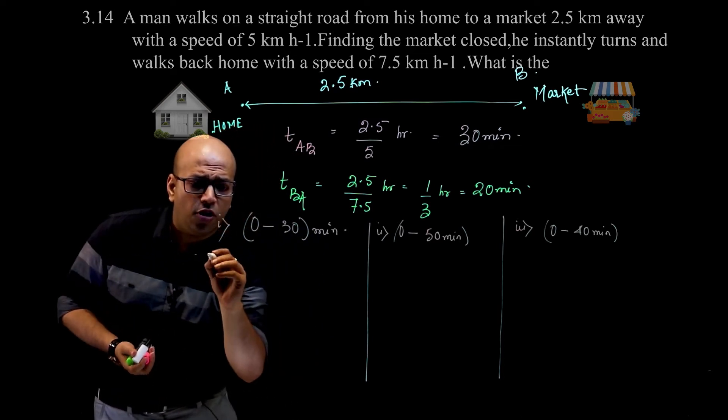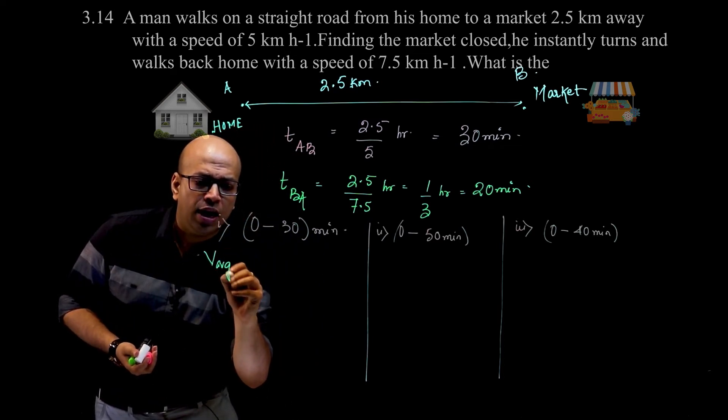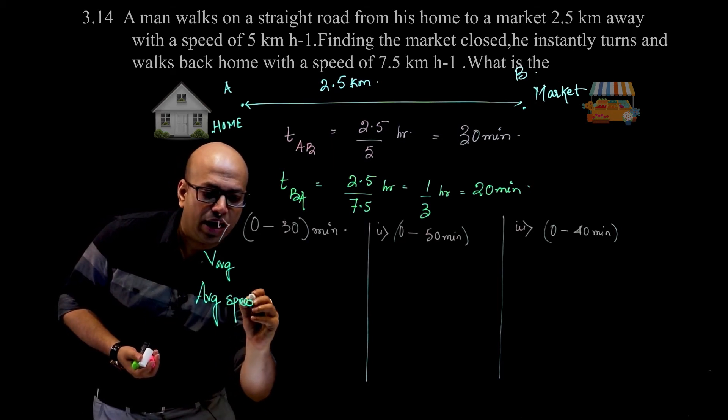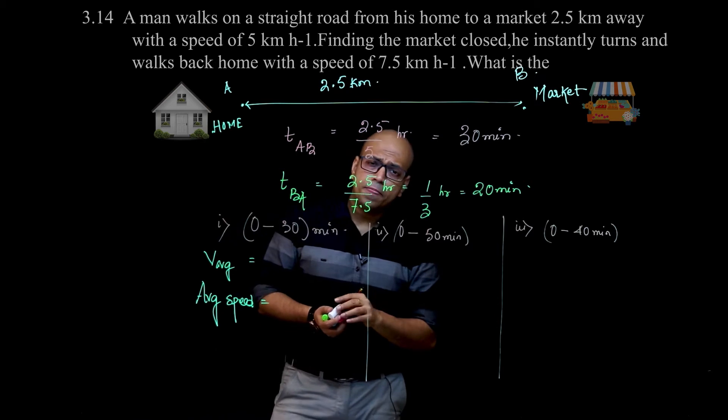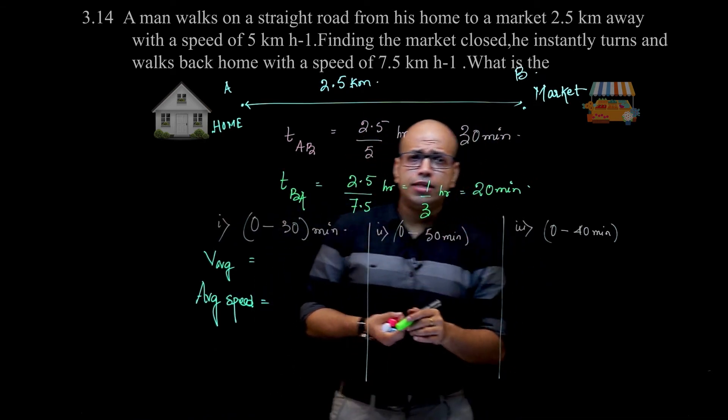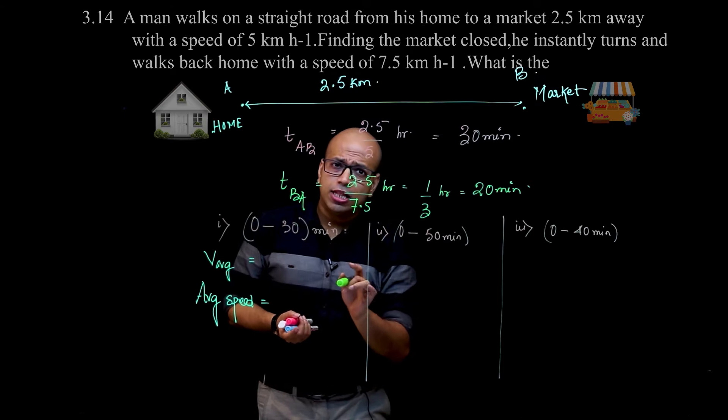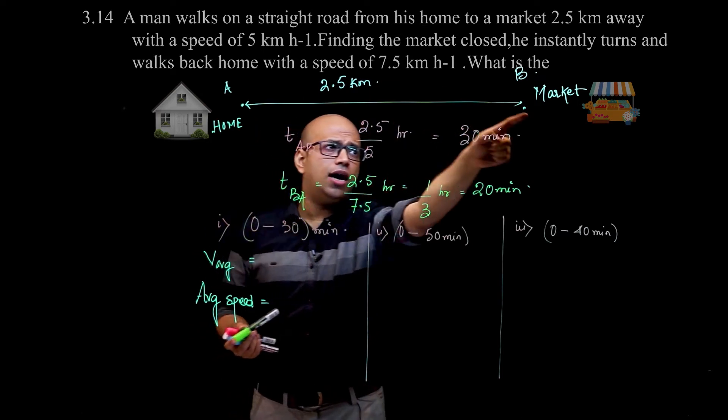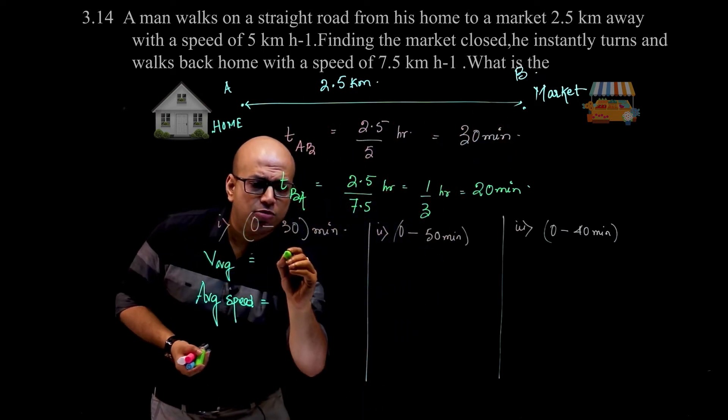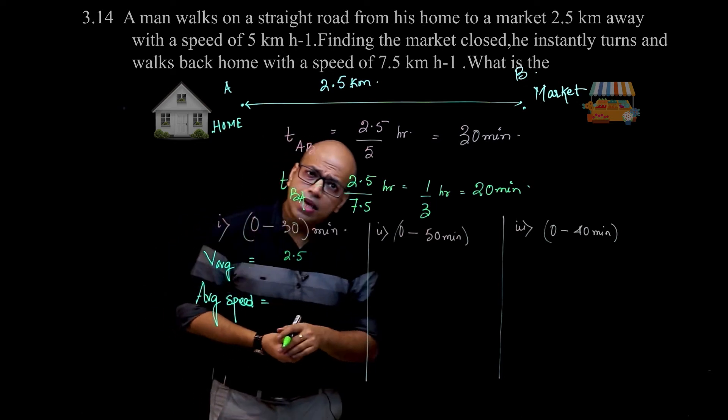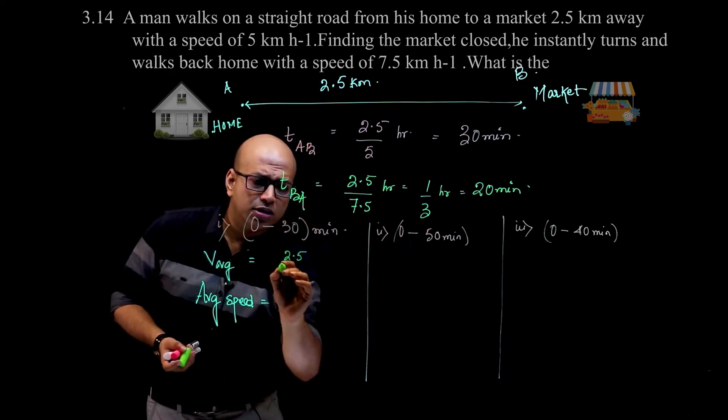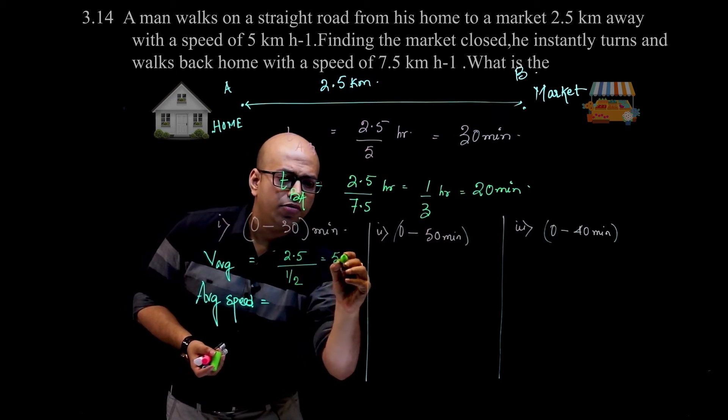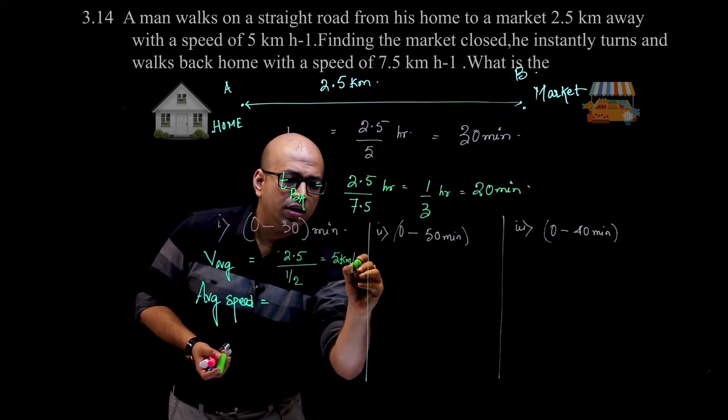So first, average velocity equals displacement by time taken. For 0 to 30 minutes, it's 2.5 km in a straight line. Time is 30 minutes, which is half an hour. So ultimately, 5 kilometers per hour.